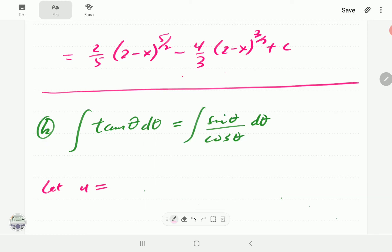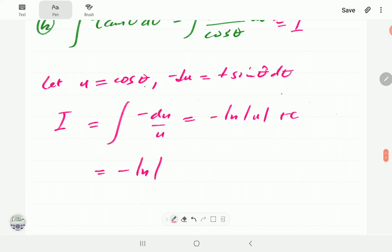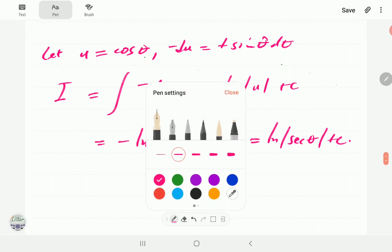We're going to let u equal cos θ. Then du is -sin θ dθ. We can bring the negative to this side. So our integral can now be simply written as -du/u because u in the denominator is cosine. This is simply -ln u plus c. But remember u is cosine. And using properties of logs we can write this as ln sec θ plus c. That is our final expression.